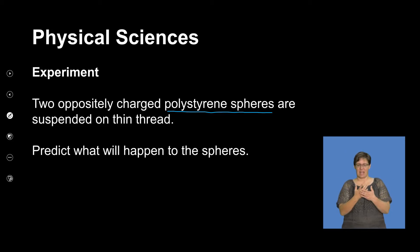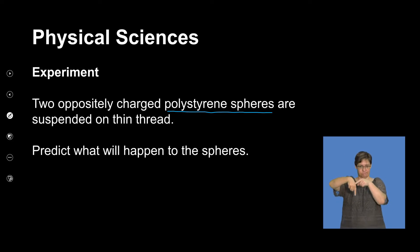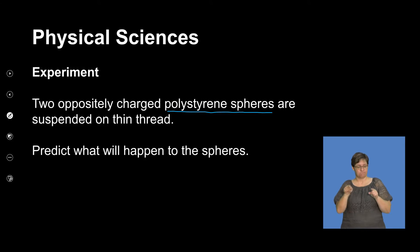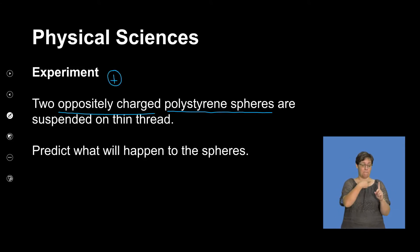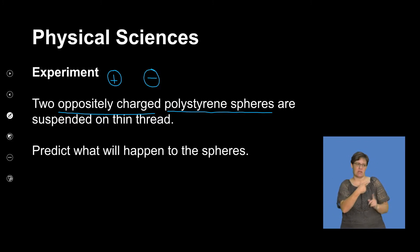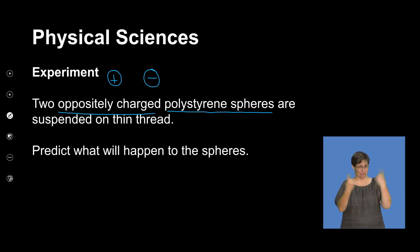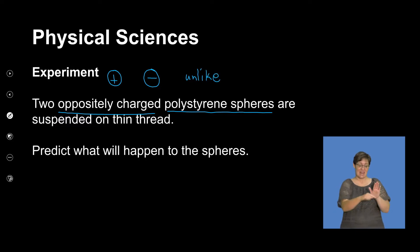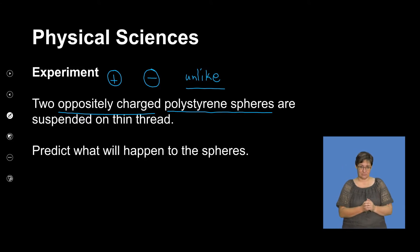These polystyrene spheres are typical materials that could be thought of as insulators. They are suspended on a thin thread. We've got two oppositely charged spheres — if it says oppositely charged, it means one may be positive and the other one is negative. So opposite suggests that the charges are unlike: positive-negative, or negative-positive.